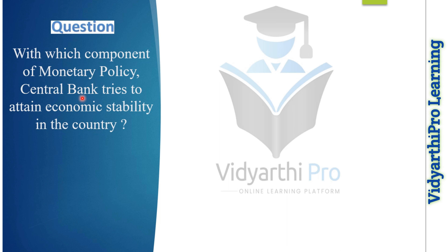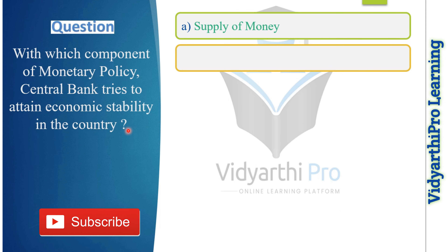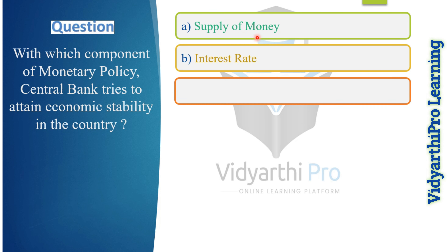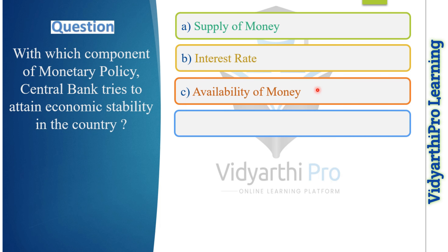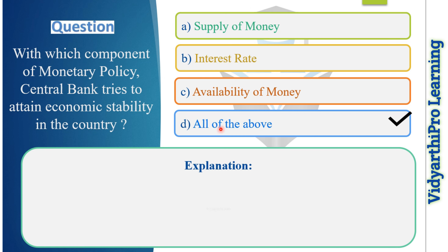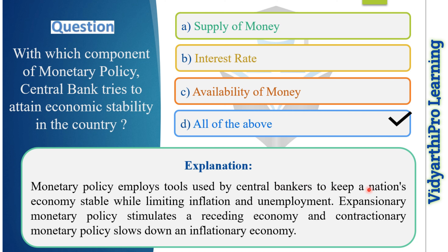Our next question: with which component of monetary policy does the central bank try to attain economic stability? Options: supply of money, interest rate, availability of money, or all of the above. The correct answer is option D, all of the above, because monetary policy employs tools used by central bankers to keep a nation's economy stable while limiting inflation and unemployment. Expansionary monetary policy stimulates a receding economy, while contractionary monetary policy slows down an inflationary economy.